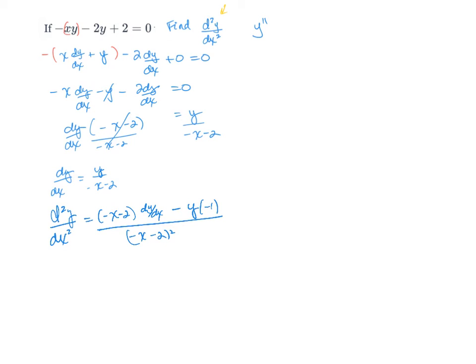So here's the deal. We have to simplify this. This dy/dx here, that is not going to do. So what we have to do is we actually have to replace this with what dy/dx is, which is here. So this little piece is now going to go in place of this. So d²y/dx² equals (-x - 2) times y/(-x - 2) plus y all over (-x - 2)².